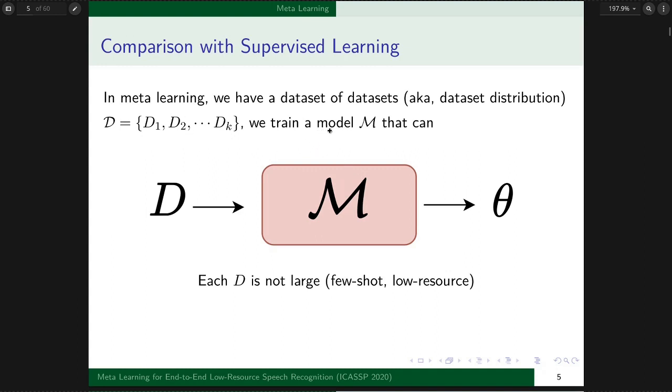Then we train a Meta model, capital M, that receives dataset D as input and outputs the needed parameters. In general, each D is not so large, in few-shot or low-resource cases.